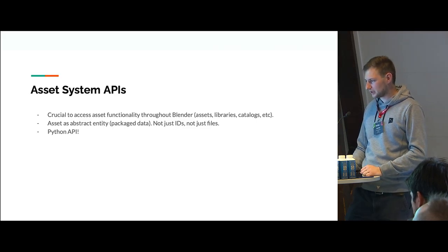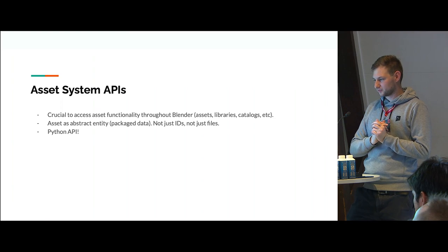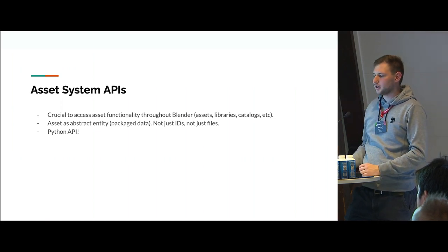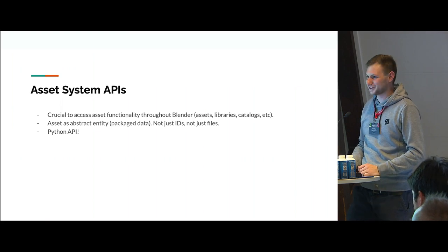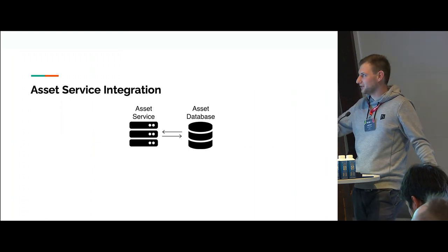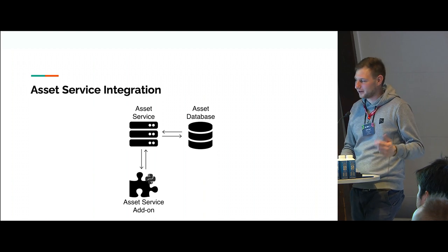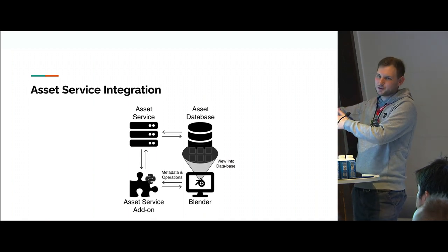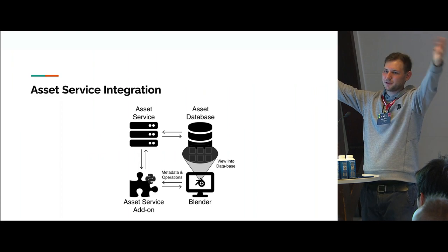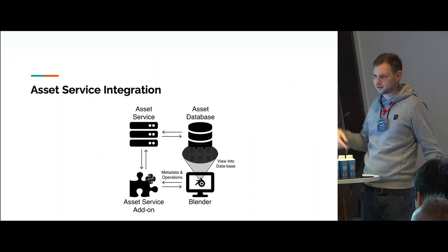There are going to be APIs for the asset system — internal APIs so it can be integrated into different workflows. It's really about making things extendable: you don't just have files or data blocks, there's a Python API which is quite important for all kinds of asset service support. Typically you have some kind of asset service that connects to an asset database, and with the help of an add-on, Blender can just get a view into that asset database. All Blender has is a view — previous previews, names, type characteristics — and if you drag it in, the appropriate code gets executed.